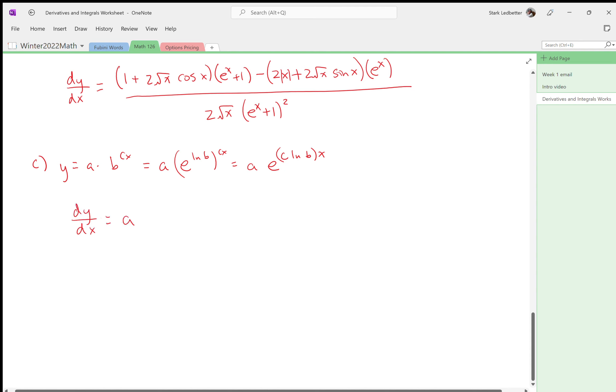Okay, so that makes it kind of more clear what to do. A times e to the something has a derivative of the same thing, e to the something, times I need to do the chain rule, but now that's a constant times x, so that's good. So I just multiply by c natural log of b.